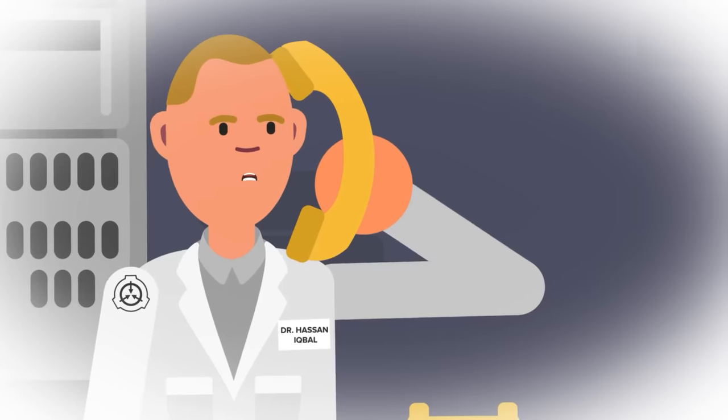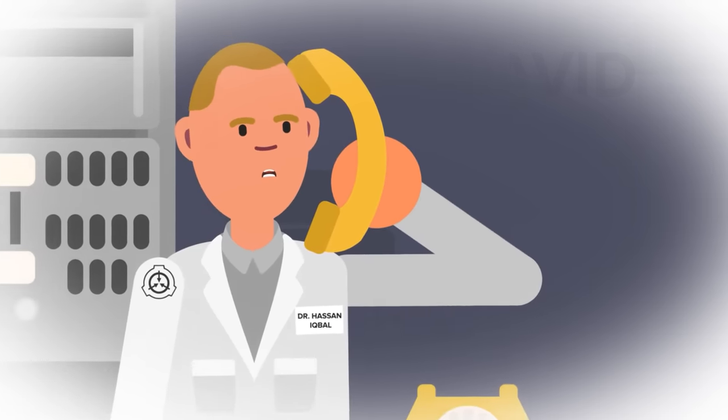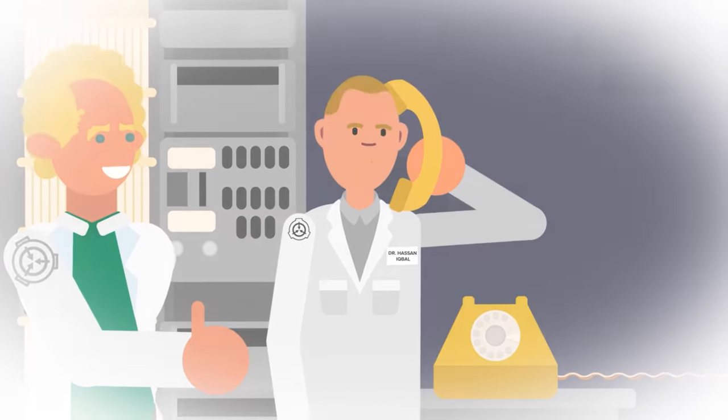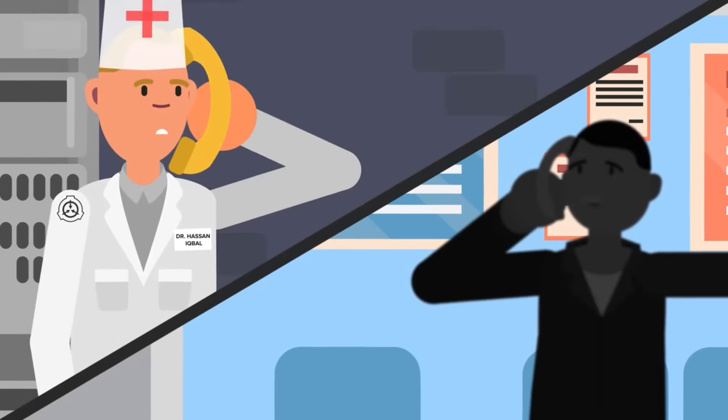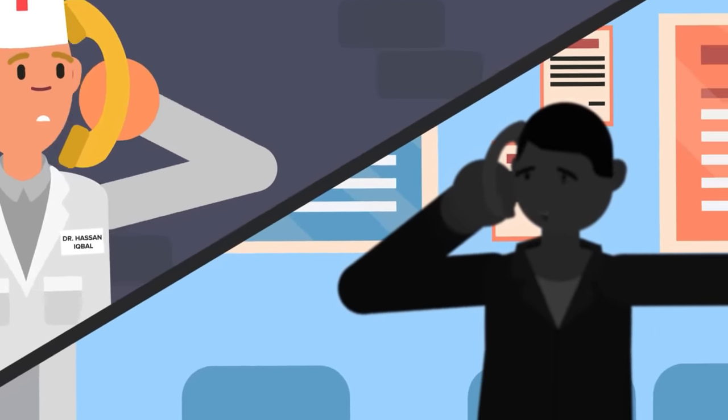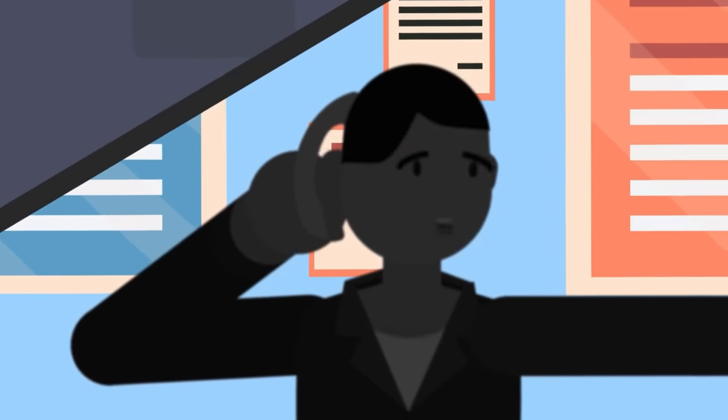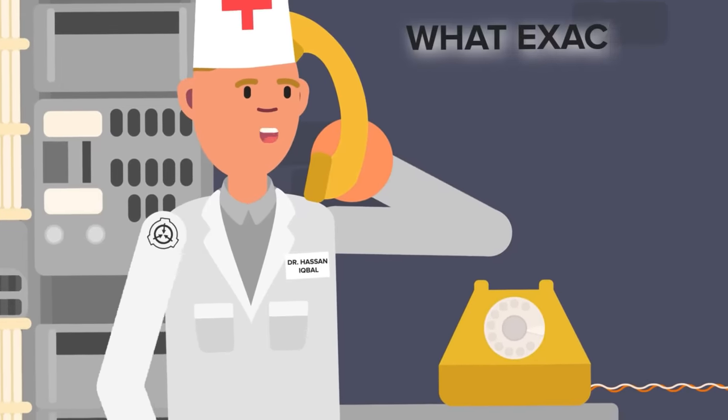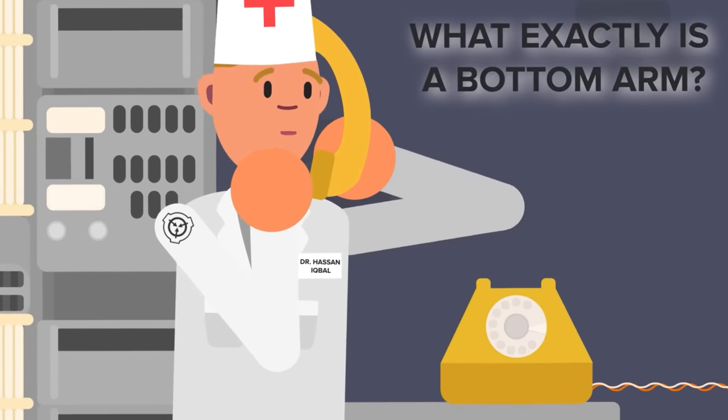The voice, or David, appeared to be in its usual state of frustration and distress, incorrectly believing that Dr. Iqbal was a medical doctor at the hospital he was currently trapped inside. David implored him to remove the cast from his bottom arm. When Dr. Iqbal questioned David on what exactly a bottom arm is, he responded with confusion.